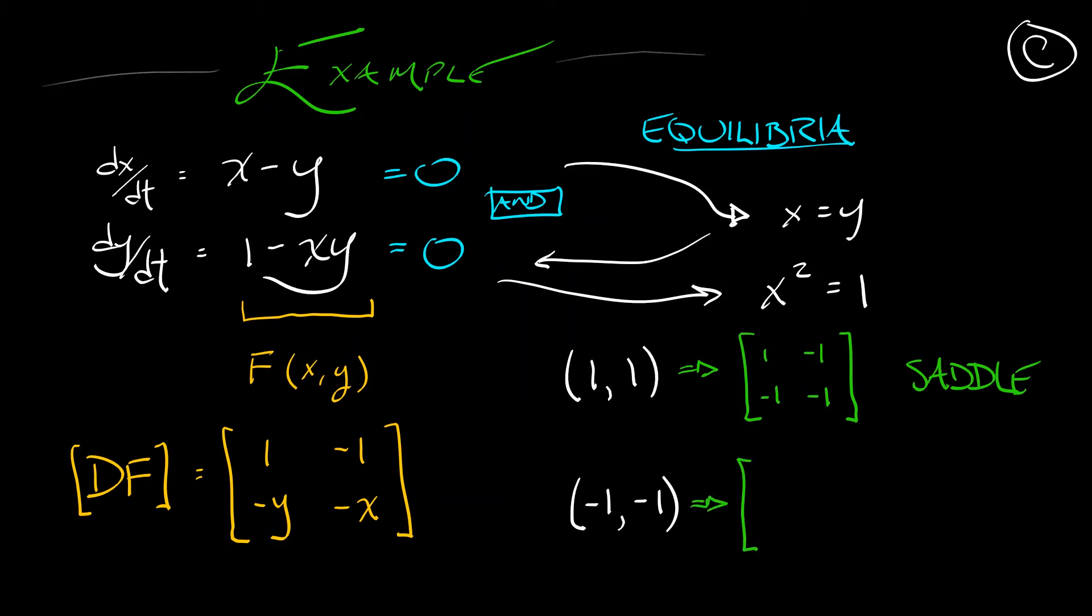The second equilibrium at (-1, -1). When we evaluate the derivative there, we get the matrix [1, 1; -1, 1], that has positive trace, that has positive determinant, and they work out so that these eigenvalues are complex. That means you've got a spiral source. That's it. That's our equilibria. We've classified things.